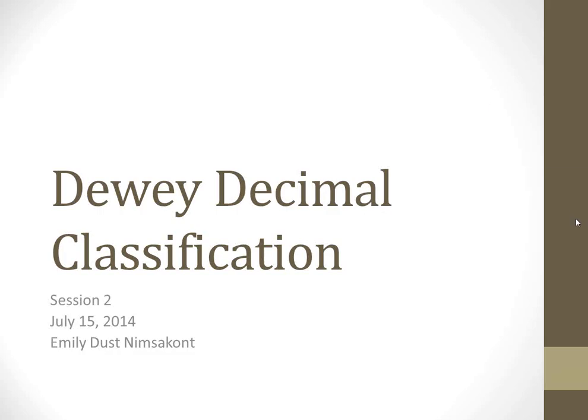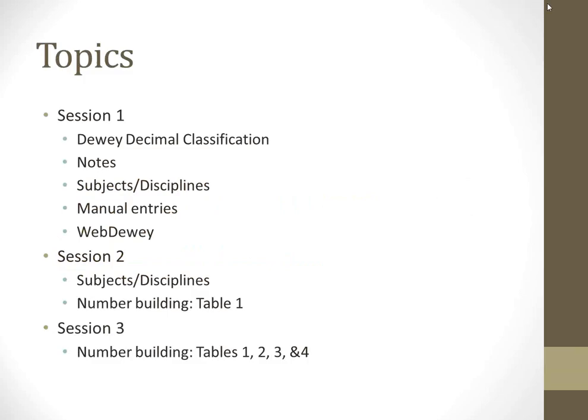Welcome to session two of Dewey Decimal Classification. Let me go over the agenda for the class in general. Last week we talked about Dewey Decimal Classification in general, notes and the concepts of subjects versus disciplines, the manual to help you make decisions about numbers, and we went over WebDewey. Today we'll talk more about subjects versus disciplines and get into number building with Table 1. Next week we'll cover the rest of the tables. But first, we're going to go over Assignment 1.